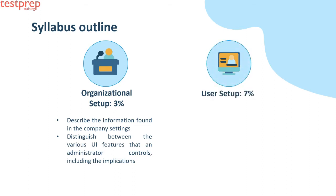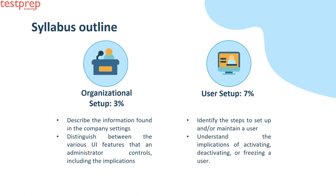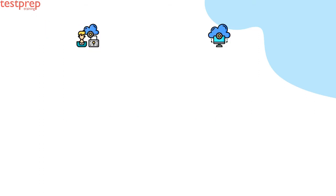User Setup, 7%: First, identify the steps to set up and/or maintain a user — for example, assign licenses, reset passwords, and resolve locked user accounts. Second, understand the implications of activating, deactivating, or freezing a user.